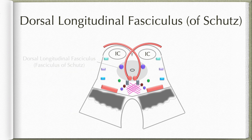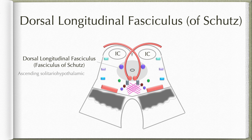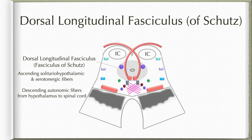Coming to the next composite tract: the dorsal longitudinal fasciculus, or fasciculus of Schutz. This is again made up of both ascending and descending fiber bundles. The ascending fibers include solitariothalamic tract fibers and serotonergic fibers. The descending fibers include descending autonomic fibers beginning from the hypothalamus, projecting to the preganglionic sympathetic neurons in the lateral horn of the spinal cord. Any injury to this dorsal longitudinal fasciculus will result in the features of Horner's syndrome.